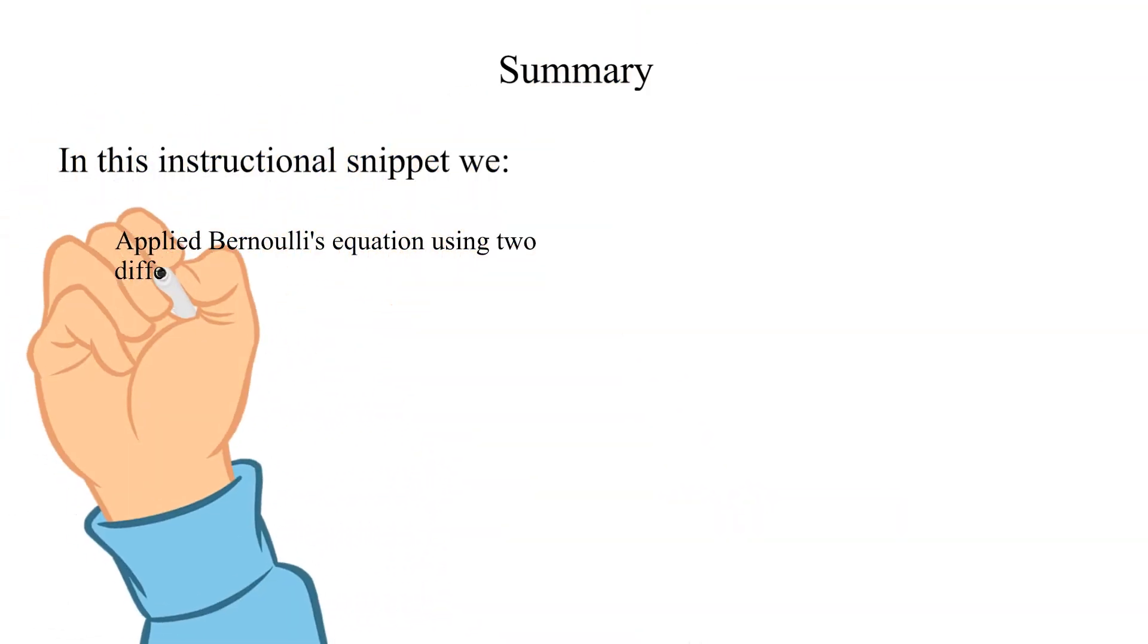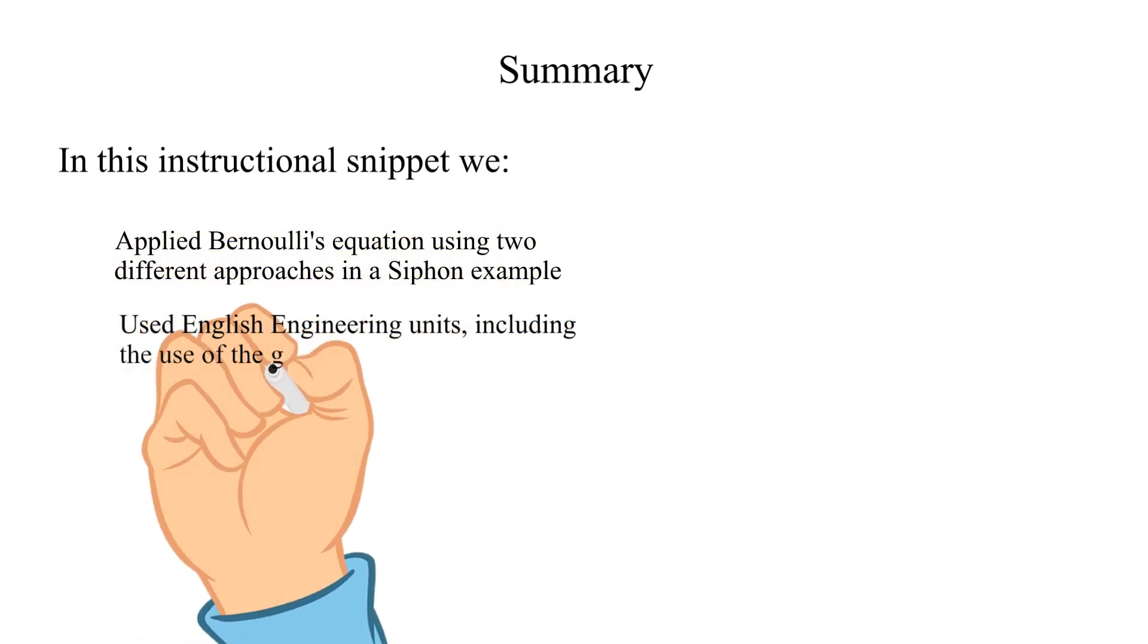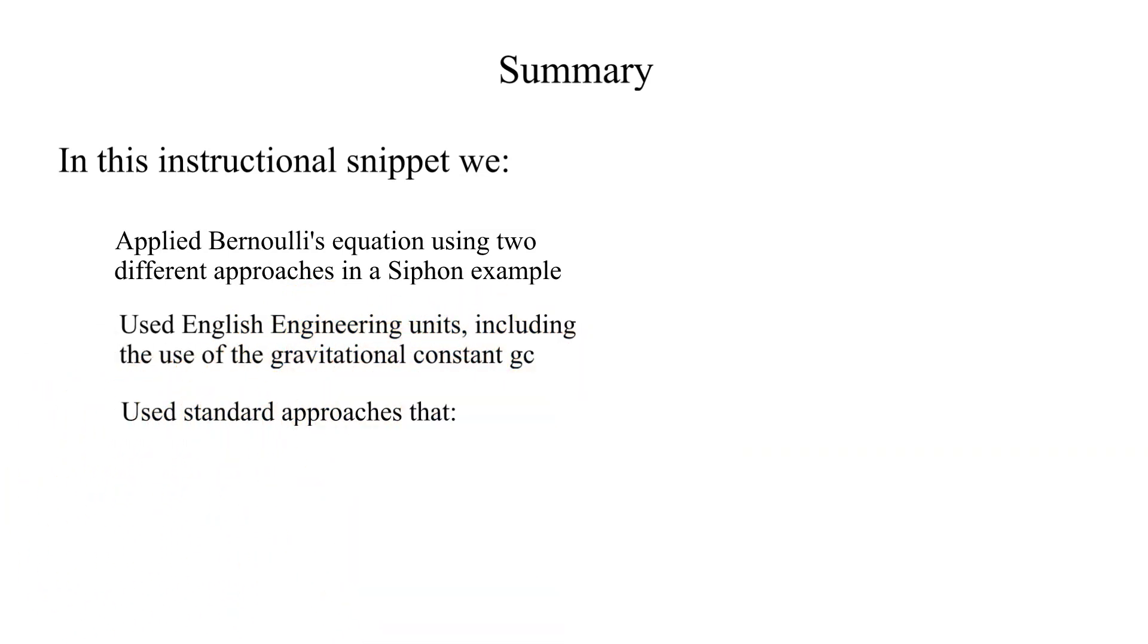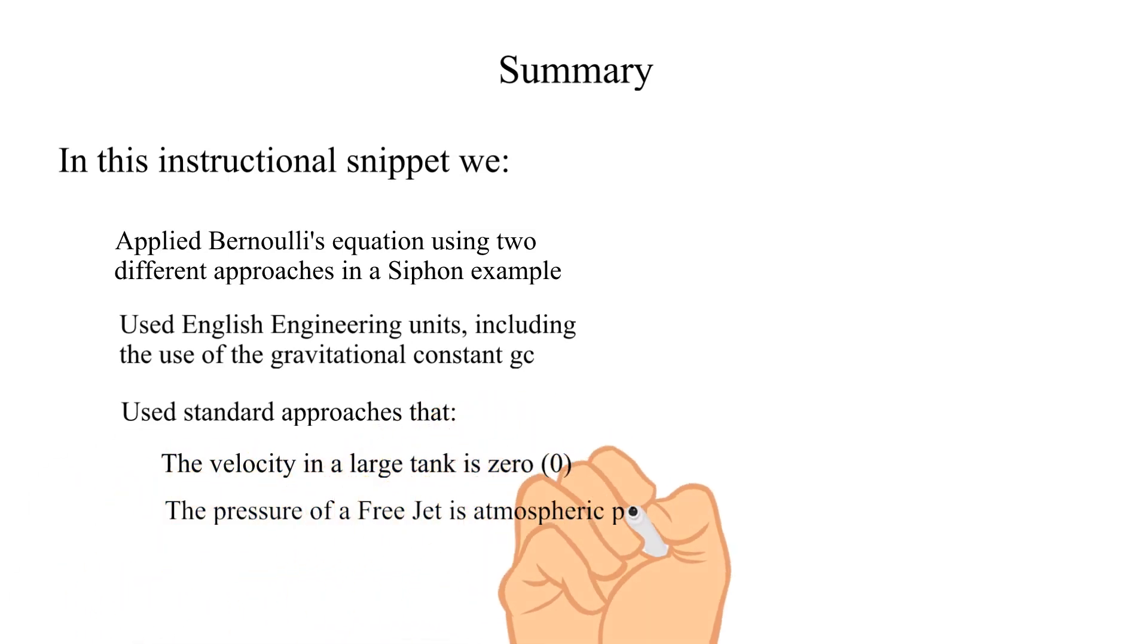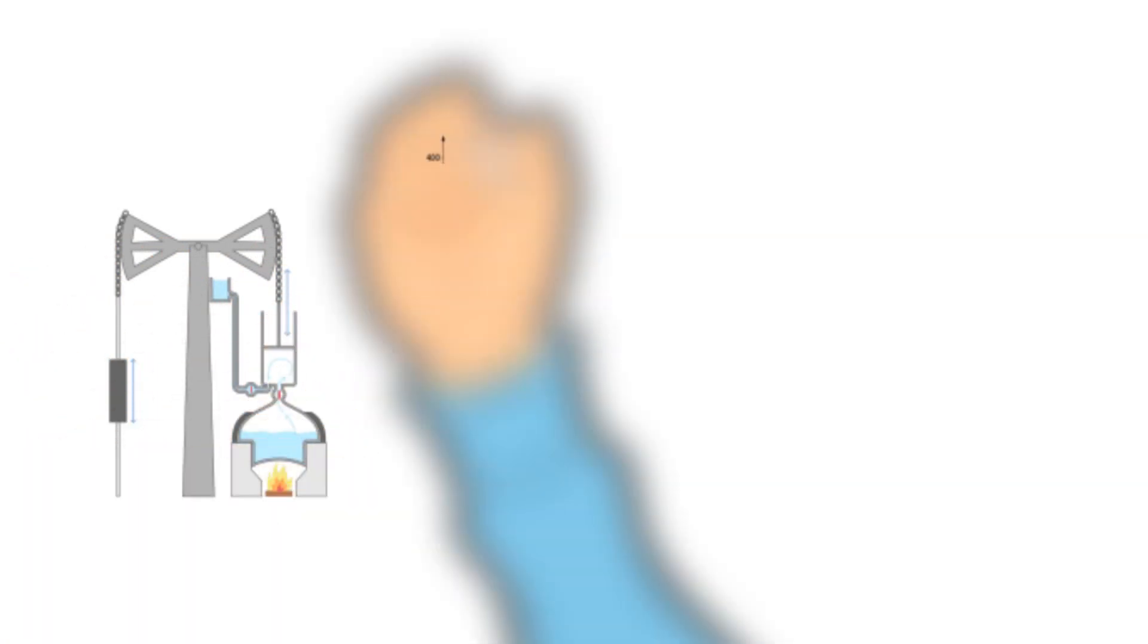In this instructional snippet we applied Bernoulli's equation using two different approaches in a siphon example. Used English engineering units, including the use of the gravitational constant, g sub c. Used standard approaches that the velocity in a large tank is zero. The pressure of a free jet is atmospheric pressure.